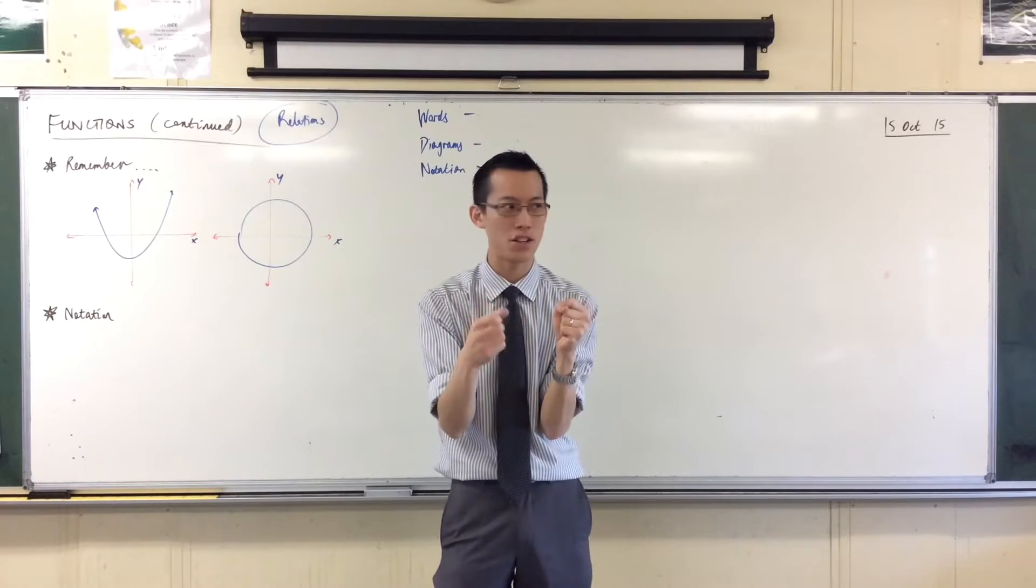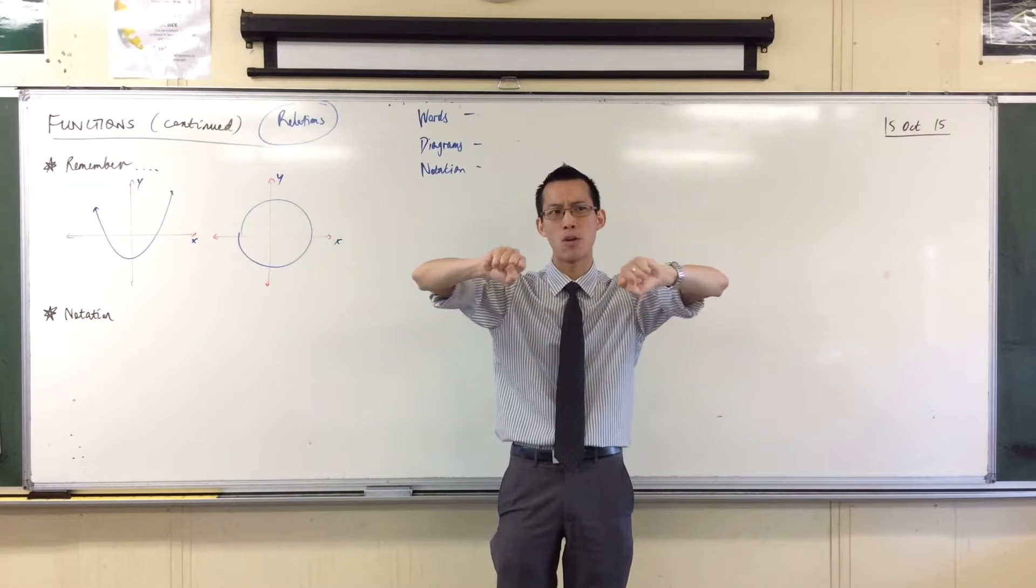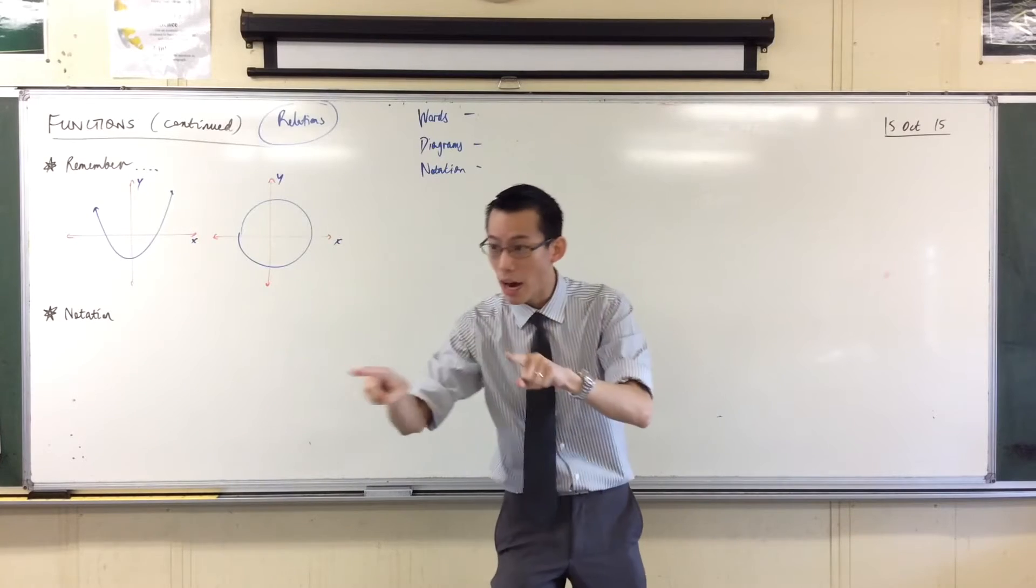What extra piece of information did we add? Outputs and inputs. Outputs and inputs. Now, what is it about the outputs and inputs that I want to know for a function? Yeah? For every output there's an input or a double area? Yeah, kind of. We're very close there.